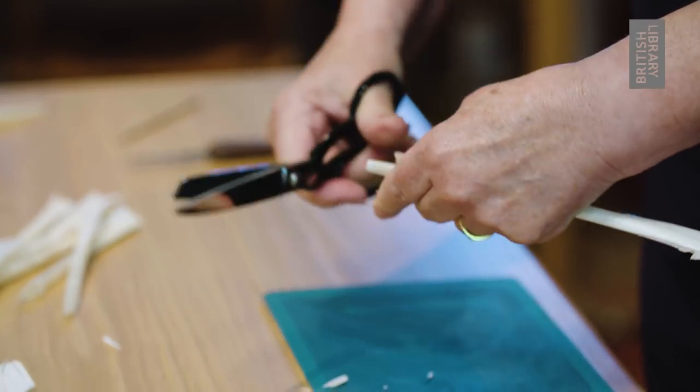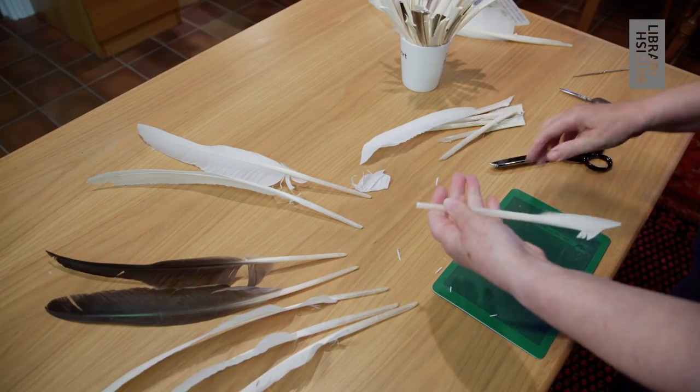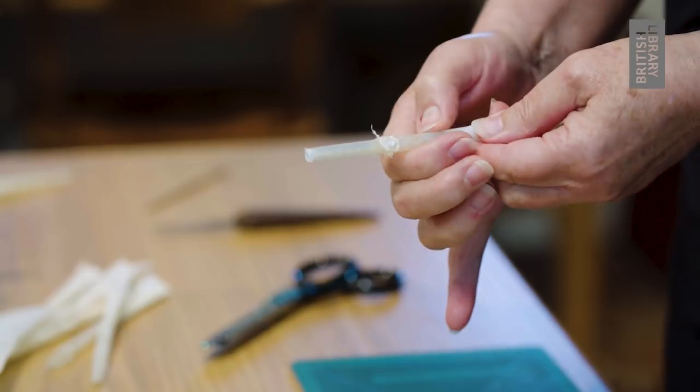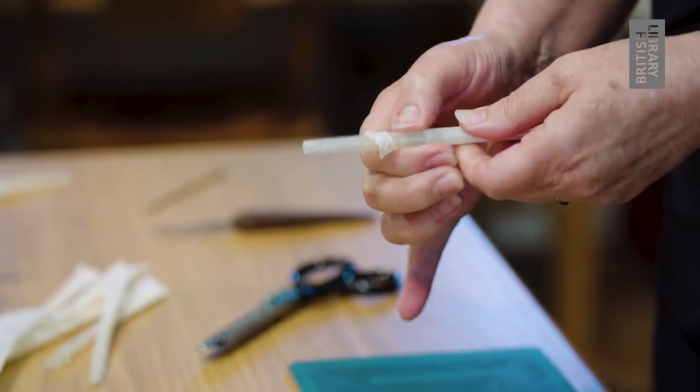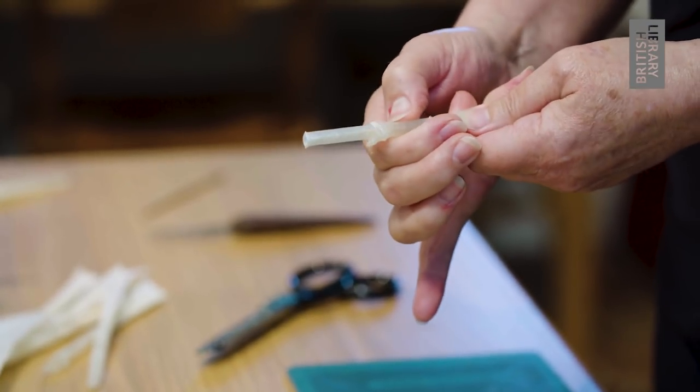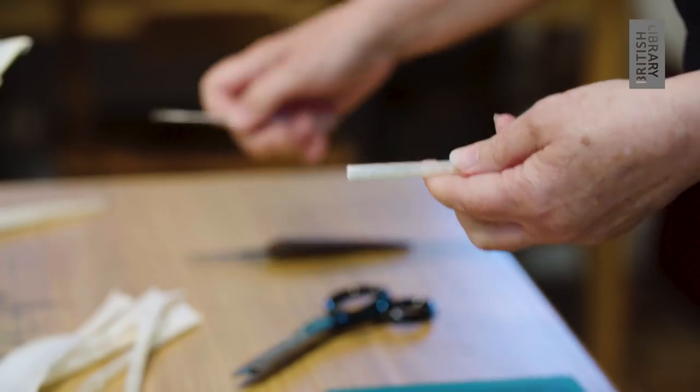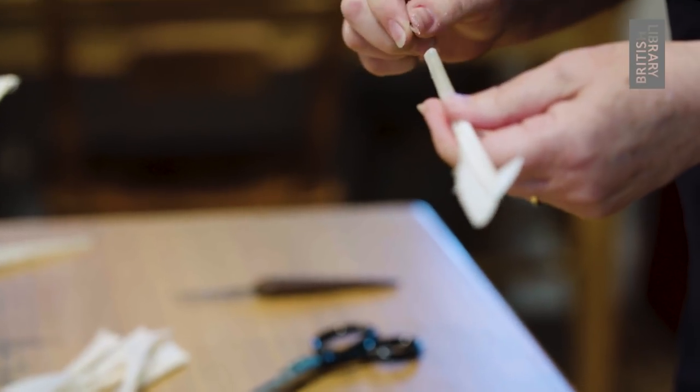The tip is also cut off, and then the outer waxy covering of a feather, which will get in the way of writing, is removed. Here I'm removing it with my fingernail. It can be removed from the back of a knife or scissors in exactly the same way.